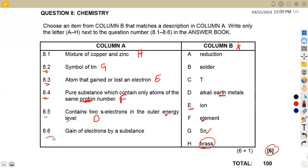And also 8.6, it gain of electrons by a substance. If you gain electrons, that's reduction. More electrons, that's a reduction. And reduction is on A. So these were the answers to question six on chemistry from the question paper of November 2020 from Meso-African Motives. Till we meet again.